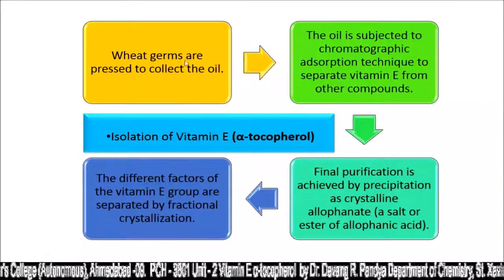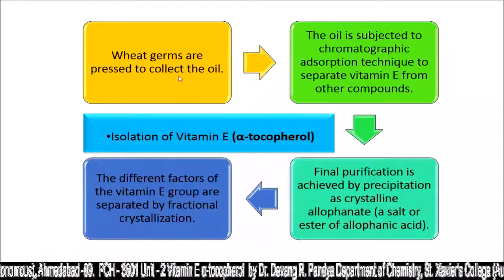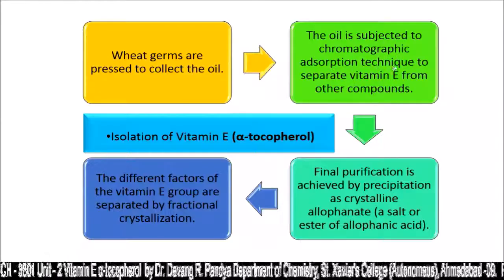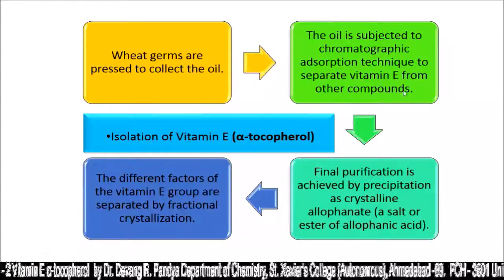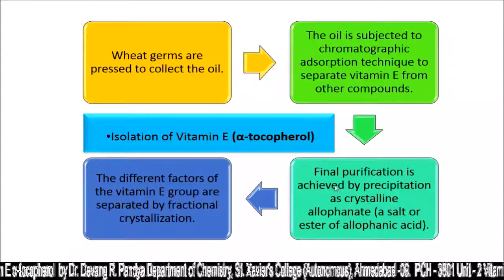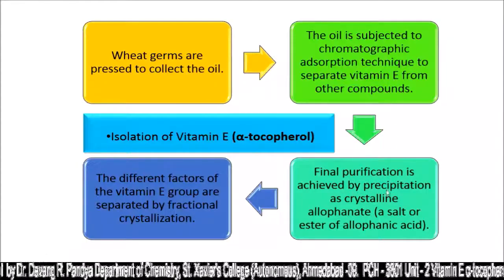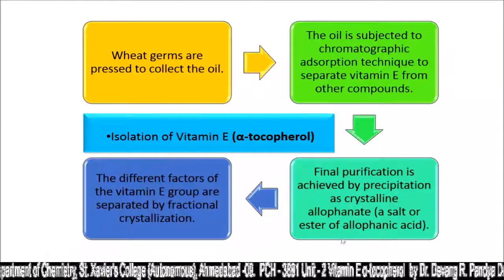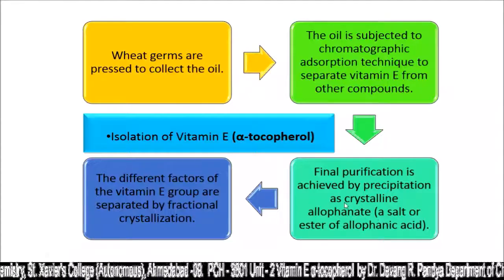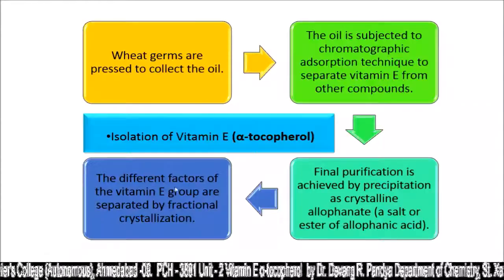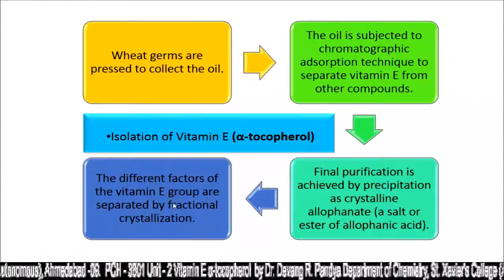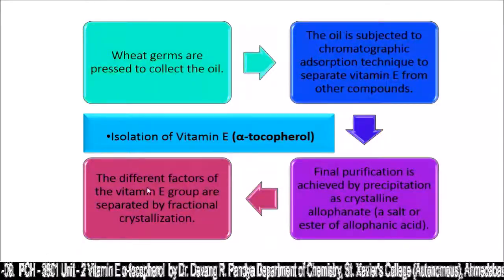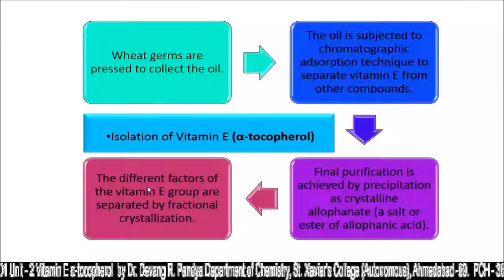For isolation of Vitamin E, wheat germs are pressed to collect the oil. The oil is subjected to chromatographic absorption technique to separate Vitamin E from other compounds. Final purification is achieved by precipitation as crystalline allophanate — a salt or ester of allophanaic acid. The different fractions of the Vitamin E group are separated by fractional distillation and crystallization.